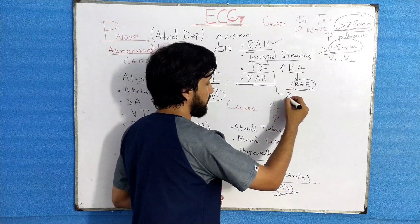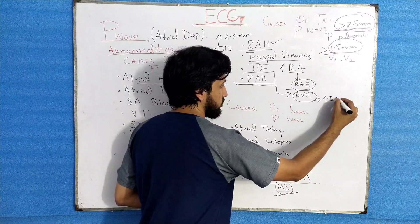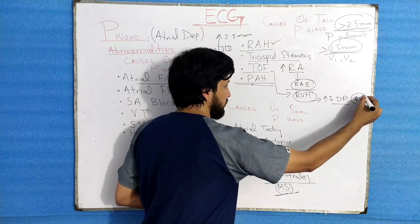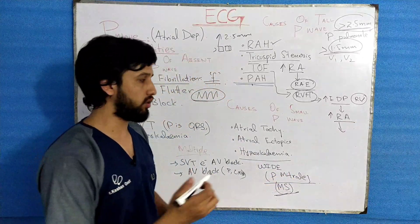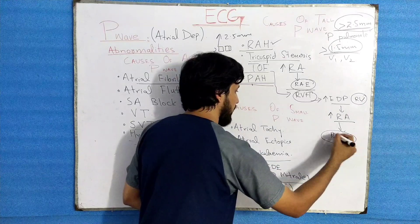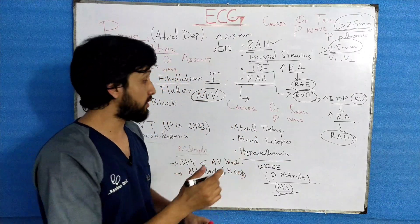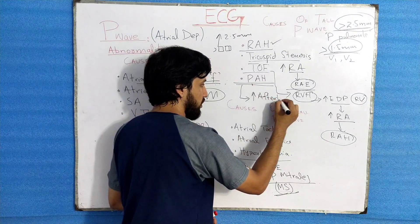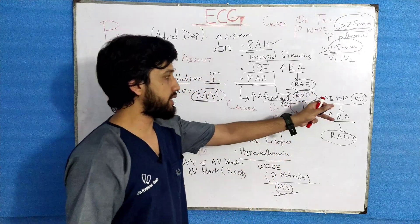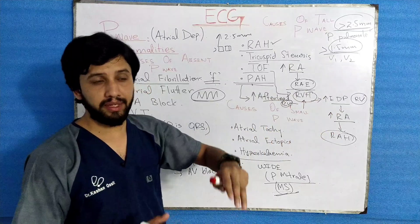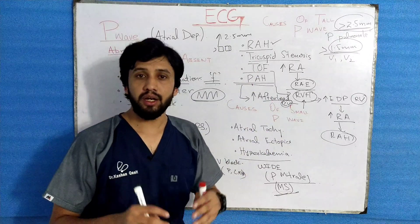In Tetralogy of Fallot there is right ventricular hypertrophy, which leads to increased end-diastolic pressure in the right ventricle, causing a rise in right atrial pressure and ultimately right atrial hypertrophy. In pulmonary arterial hypertension, there is increased afterload in the right ventricle, leading to right ventricular hypertrophy, increased end-diastolic pressure, and through the same cascade, right atrial hypertrophy — all producing a tall P wave on the ECG.